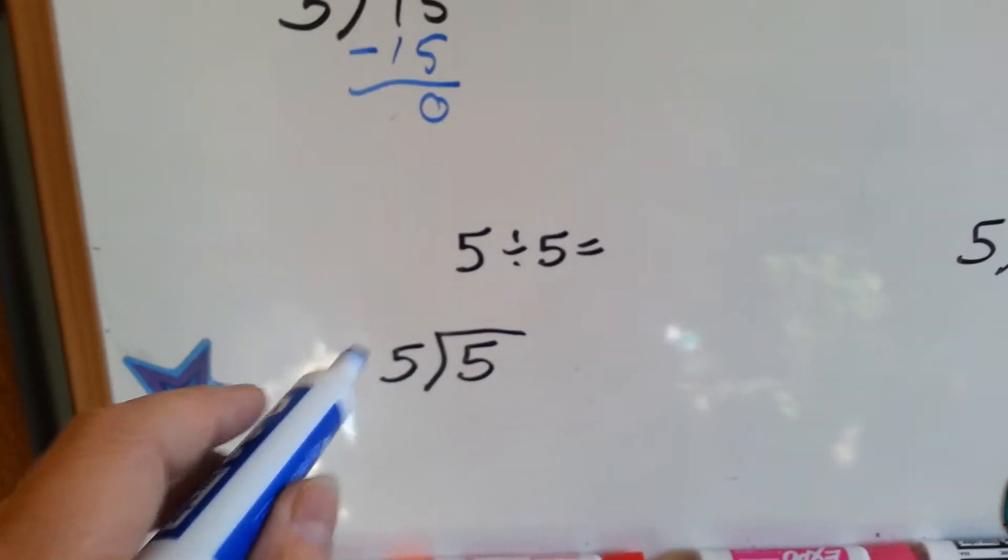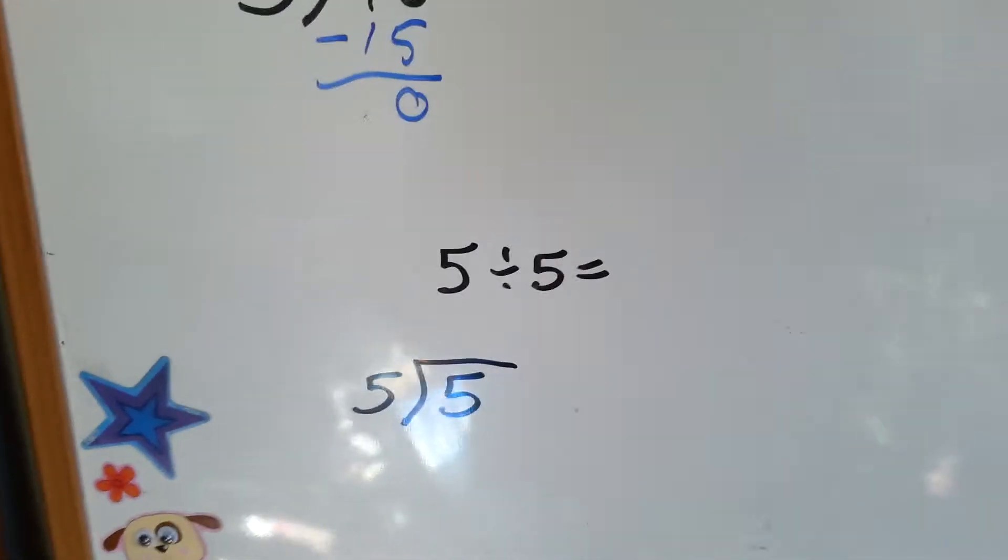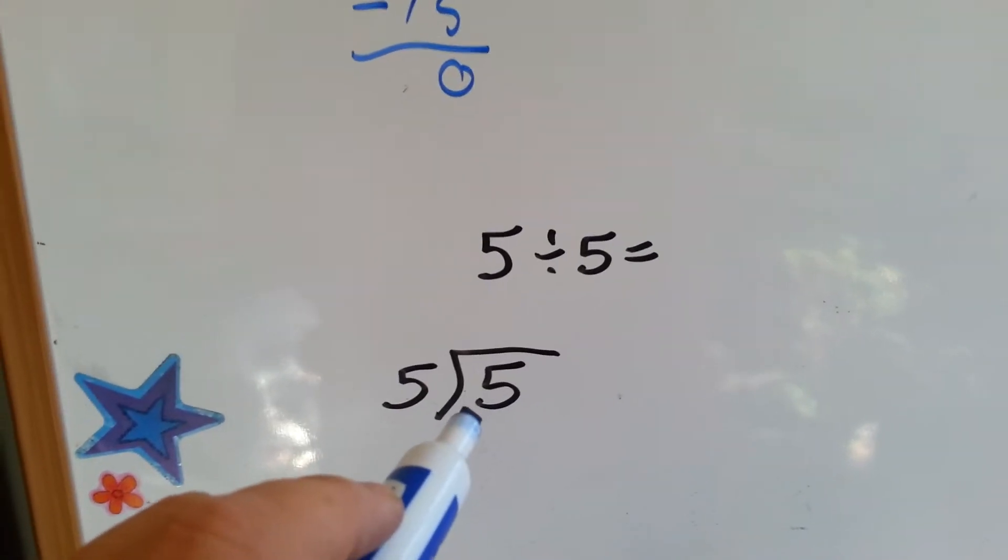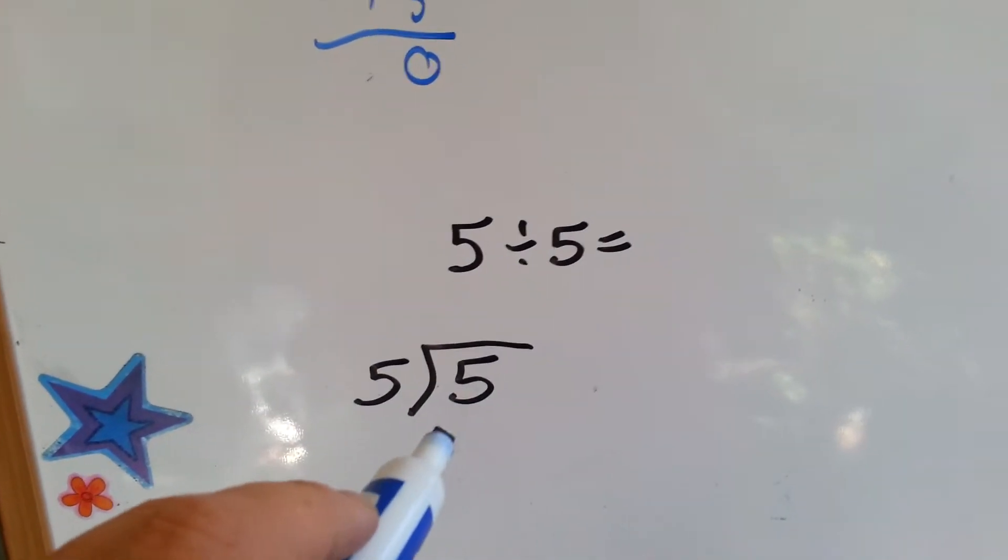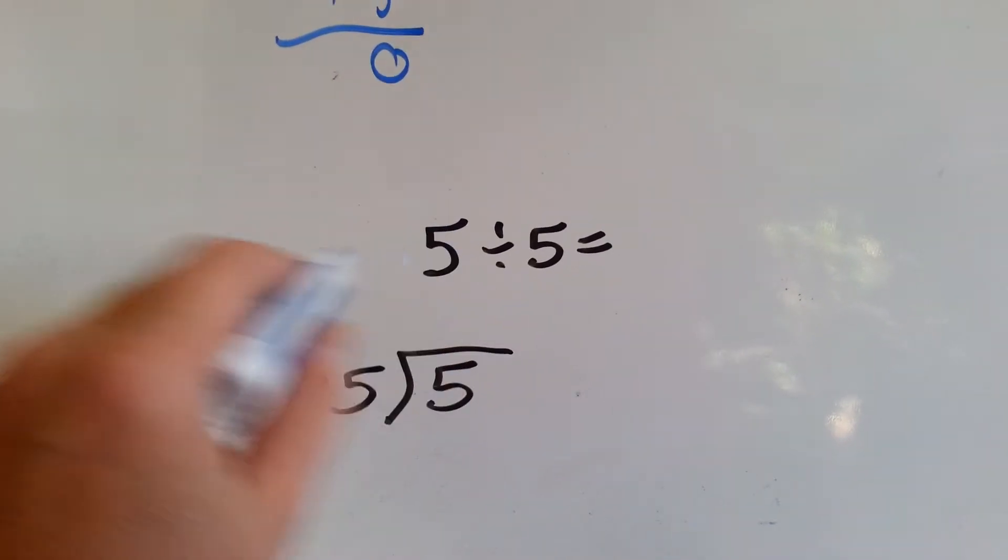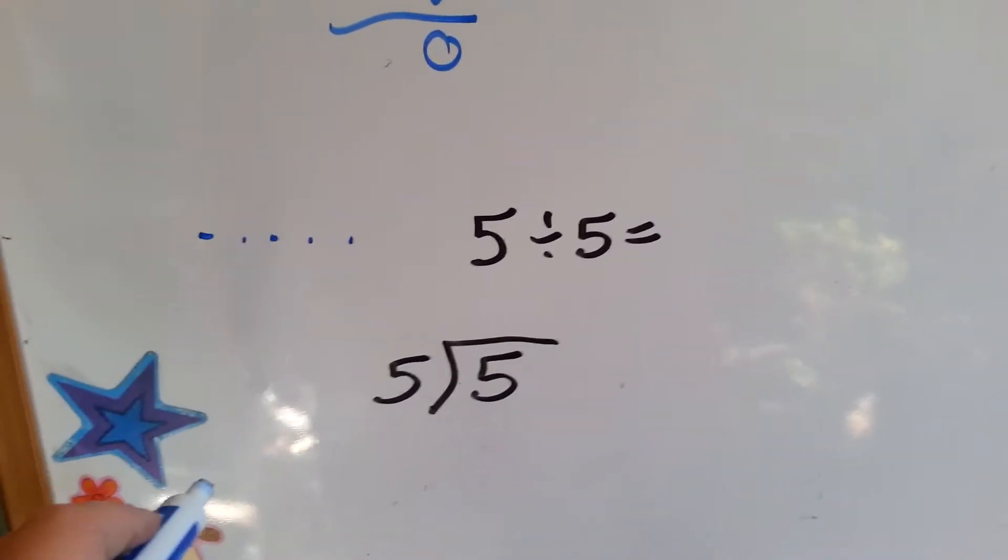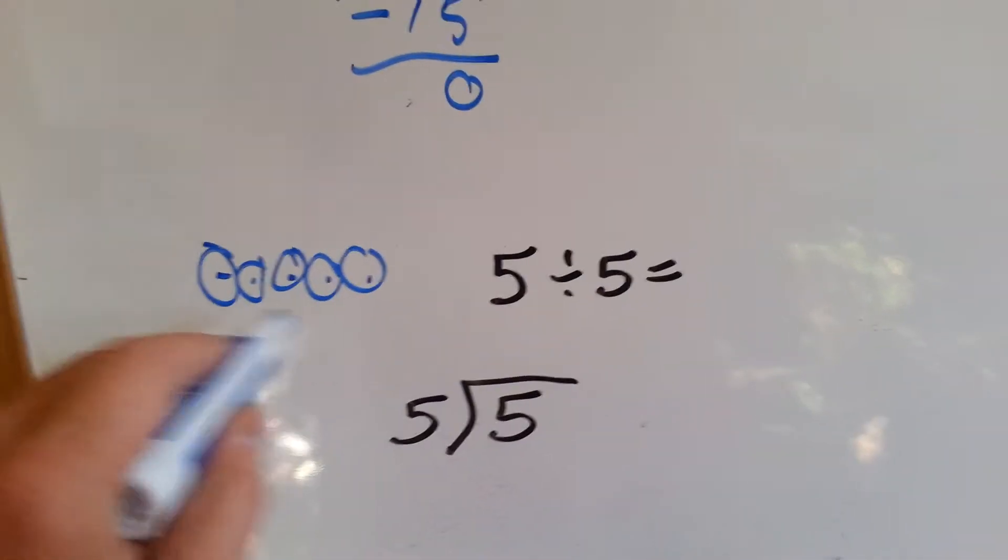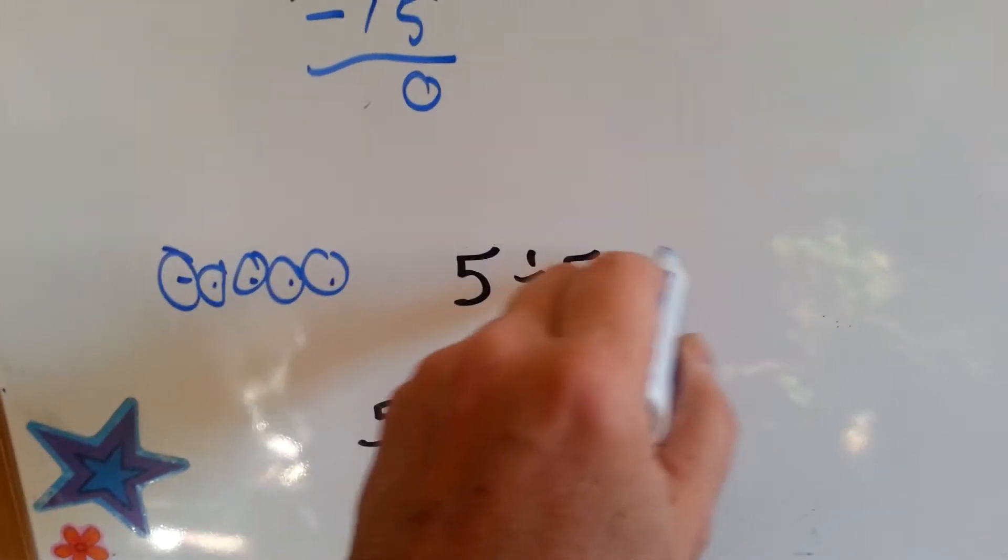So, how many times can 5 go into 5? Do you remember the identity property from one of our earlier division videos about dividing by 1? It keeps its identity. If you had 5 dots and you had 5 groups, how many dots would be in each group? 1.